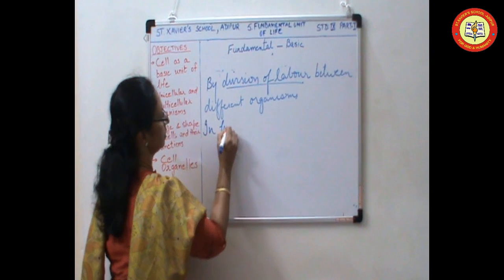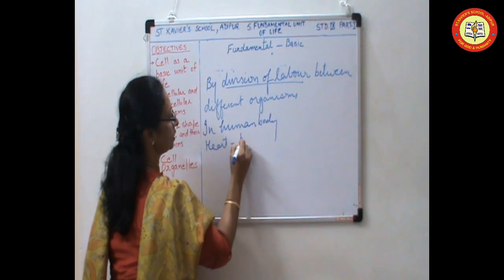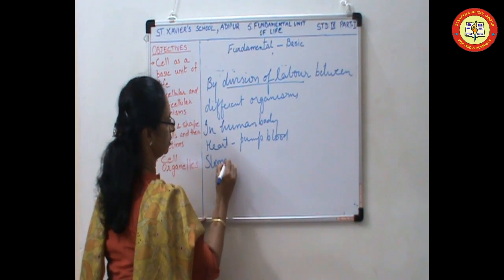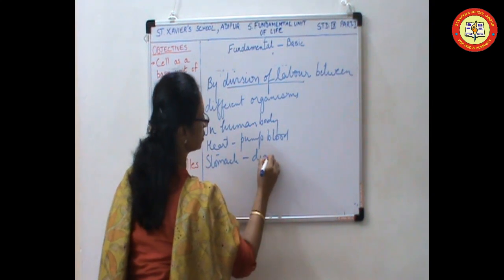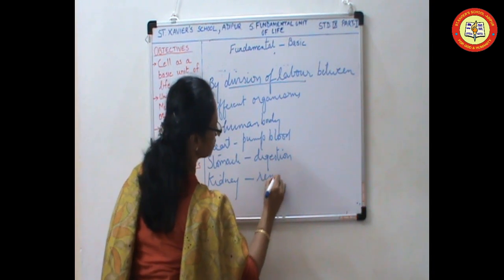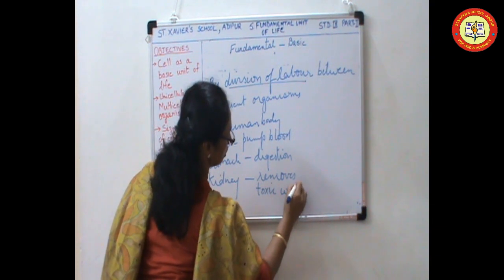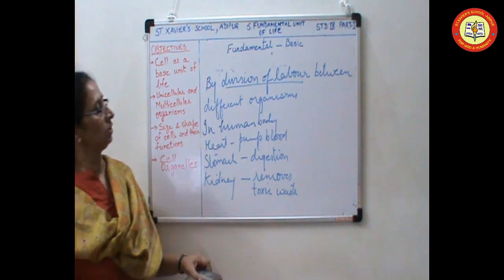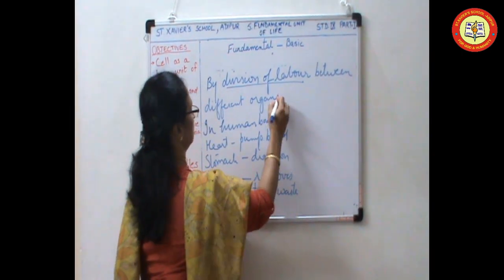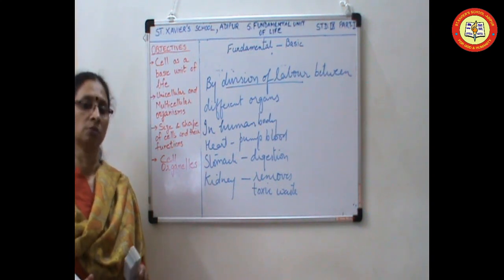For example, in human body. Heart pumps blood. Stomach performs the function of digestion. Kidney removes toxins. So by division of labour between the different organs, living organisms perform basic functions.